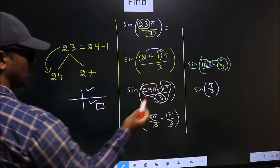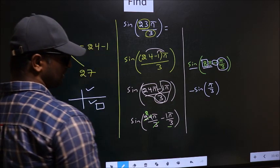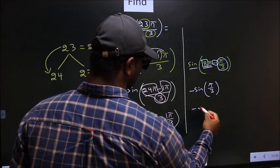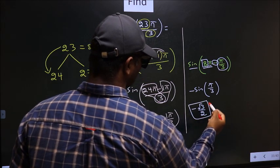In the 4th quadrant, sine is negative. So you should put negative. So that is negative sine π by 3 is root 3 by 2. So this is our answer.